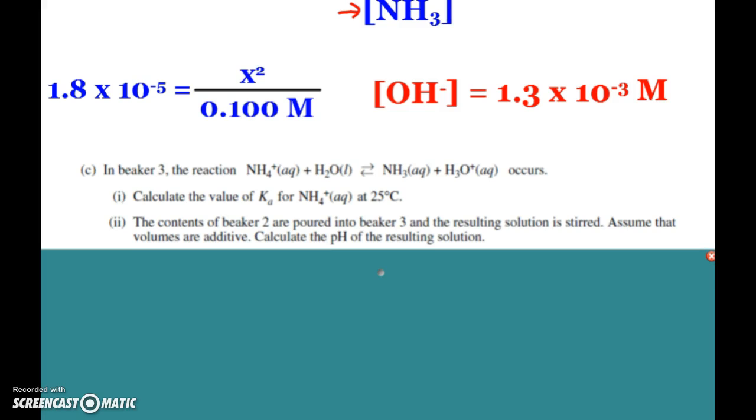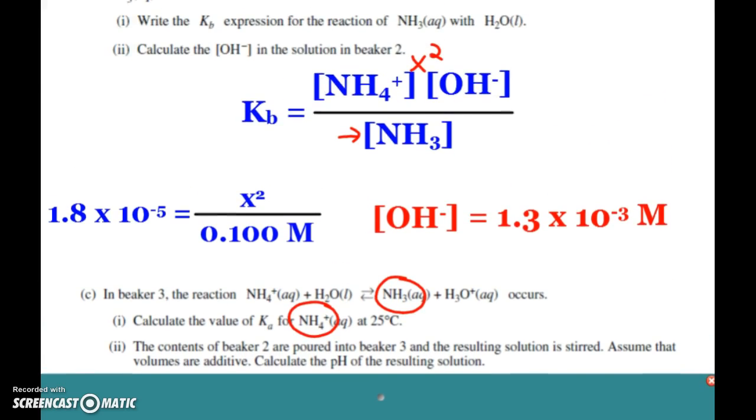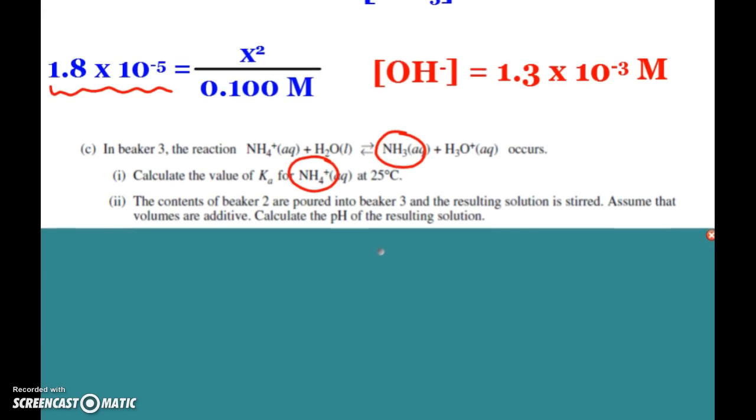All right, now beaker 3. We have ammonium plus water makes ammonia plus hydronium, and we want to know the value of Ka for the ammonium ion. Even though we have these two separate beakers, remember that ammonium and ammonia are conjugate acid-base pairs. We were given Kb for ammonia, and that was 1.8 × 10^-5.